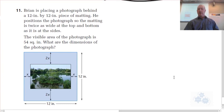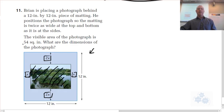Now, we'll take a look at 11 as well. This is a very similar question. So number 11 says that Brian's placing a photograph behind a 12 by 12 inch piece of matting. Now, they made the sketch for you, so that's really nice. He positions the photograph so the matting is twice as wide at the top, that's where we get 2x, and the bottom, and as it is on the sides. So it's only 1x extended on the sides. The visible area of the photograph, that's right here, this area right here, is 54 square inches. So what are the dimensions of the photograph?